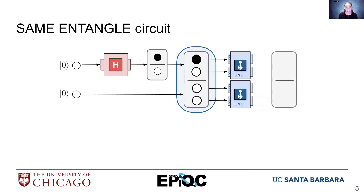In the first CNOT, the control is black, which means I'm going to toggle the state of my target — so I get black-black. In the second CNOT, my control is white, which means I'll make no change, so we get white-white. Now we can see that we have a 50-50 probability of getting each of these two pairs of results: one where both measure black, and one where both measure white.